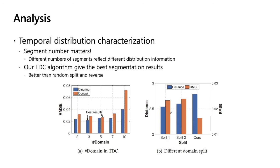We also did some temporal distribution characterization analysis. For example, if we can learn to segment the number, we can see from this figure that if we are given one time series data, we can see that they have multiple segments. For example, for this Dingling and Dongsi station, the best results are not always the same. It means that different numbers of segments reflect different distribution information. Secondly, from this figure, we can see that our TDC algorithm gives the best segmentation results, better than random split and reverse. This figure tells that our segmentation gives the largest distance of all the segments, but we have the lowest RMSE values, which means our TDC algorithm remains effective to find the most diverse distributions.